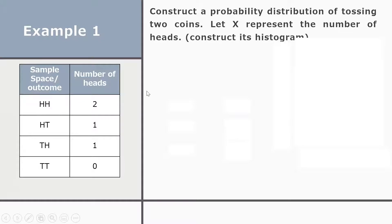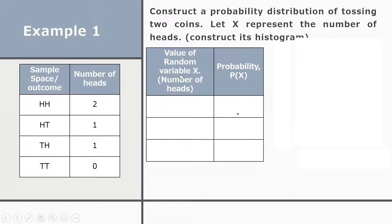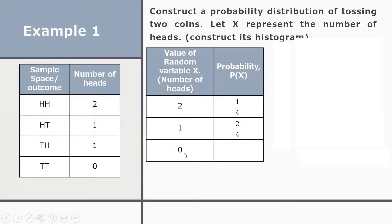Now let's construct the probability distribution using two columns: the values of random variable x and the probability of x. The values of x are 2, 1, and 0, representing the number of heads. We divide the number of times each count appeared by the total number of outcomes, which is 4. The probability of getting two heads is 1/4, one head is 2/4, and no head is 1/4.